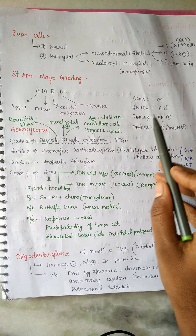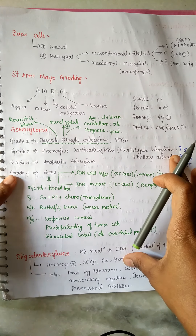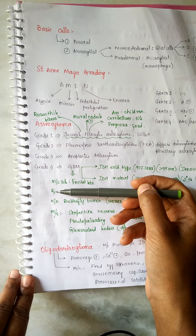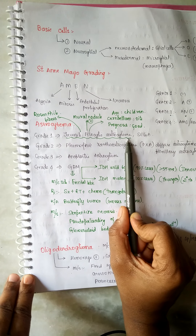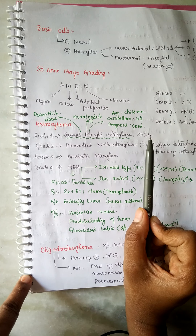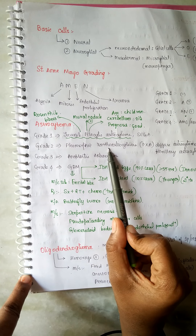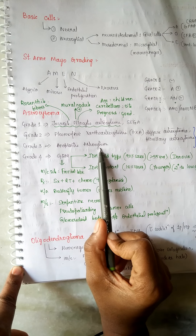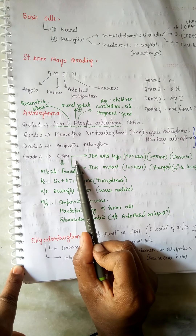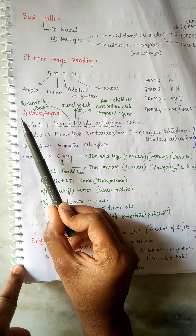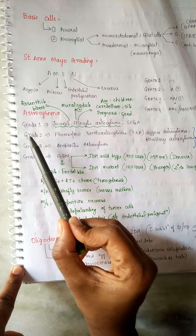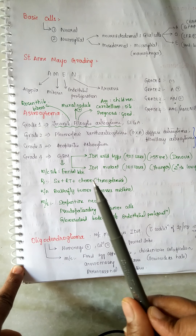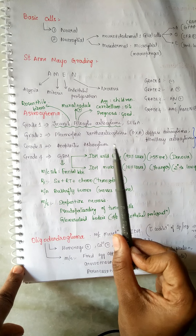Now let's discuss individual brain tumors. Astrocytoma is divided into four main types: Grade 1 is Juvenile Pilocytic Astrocytoma (JPA), Grade 2 is Pleomorphic Xanthoastrocytoma (PXA), Grade 3 is Anaplastic Astrocytoma, and Grade 4 is GBM (Glioblastoma Multiforme).